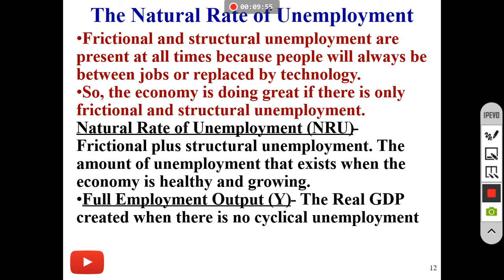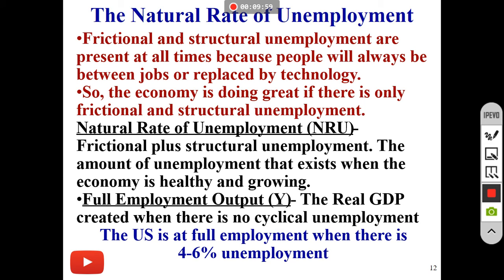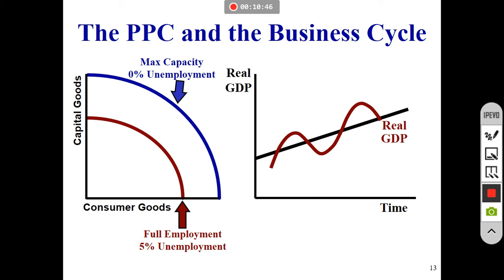Full employment output is the real GDP created when there is no cyclical unemployment. In the U.S., to be fully employed we want to be somewhere between four and six percent unemployment — five percent is considered the natural rate. Before COVID, we were at just over three percent, which actually meant our economy was running a bit hot. When new numbers come out, unemployment will be substantially higher.